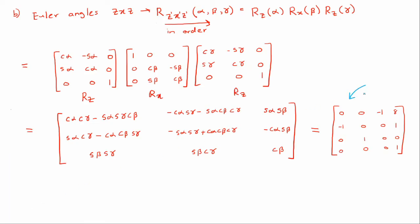So this would be your transformation matrix of the gripper relative to the base. And the rotation component of this transformation matrix would be this section, and would be equal to this rotation matrix. It is this ZXZ Euler angle representation that was used to find this transformation matrix, hence why the two matrices should be equal. By comparing the elements in the two matrices, we can now solve for our alpha, beta and gamma.